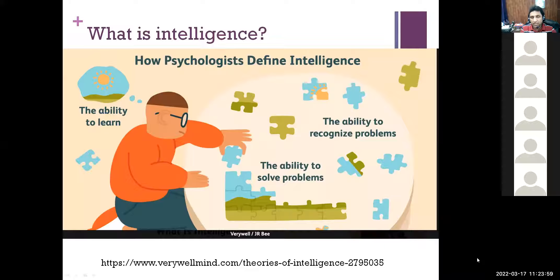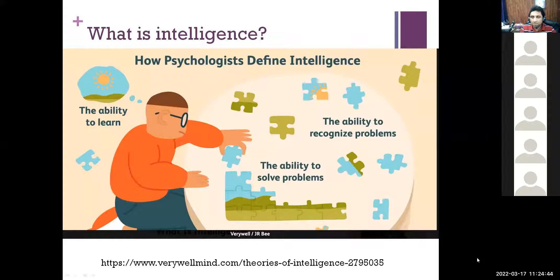Now comes the question: when people started getting interested in intelligence, what did they find? They had to first define what they mean by intelligence. I ask this to you — without looking at what is written on screen — what do you think intelligence is? Student: Thinking in a way which helps in solution of problems. If the output is in sync with what we need and we derive at that output by thinking, then that process can be called intelligent.